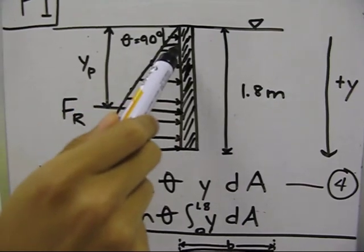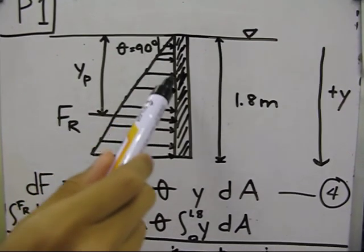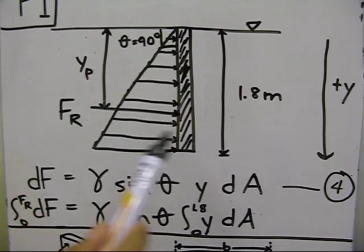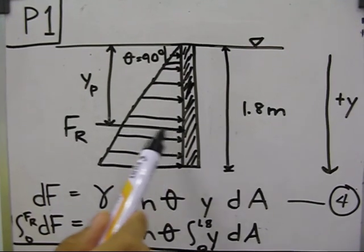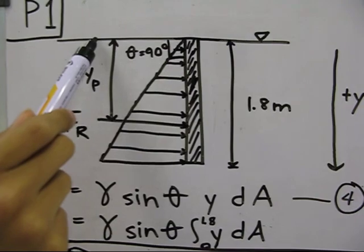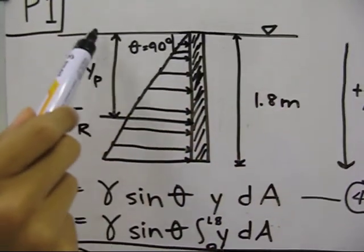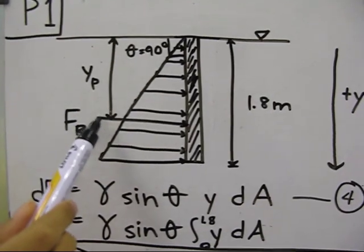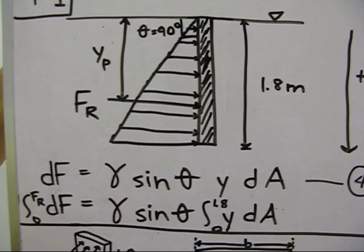If the force the material is experiencing is then increasing as the part of it is located further down and away from the free surface, as represented again by the larger arrows. As most of the force is distributed at the lower part of the material, the resultant force can be said to be at this point. Y subscript P is the perpendicular distance from the free surface to the resultant force.